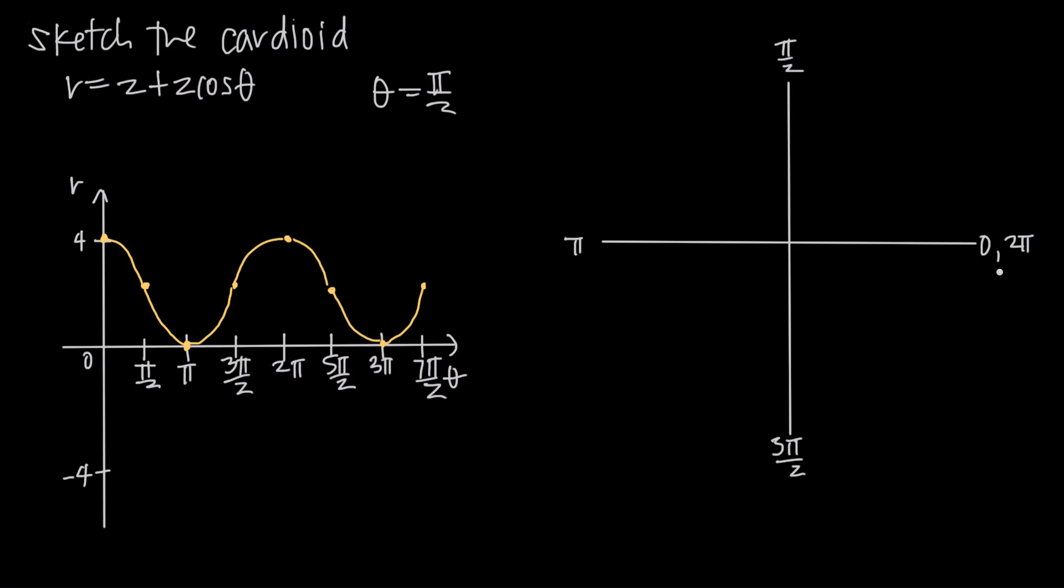And now we just want to sketch this. So at the angle 0, we're out a distance from the origin of 4 units. So if we go ahead and say that this is 4 here, we can say at the angle 0, which is along the positive direction of the x-axis here, we're out a distance of 4. So we plot that point.